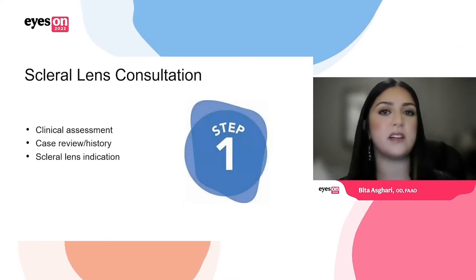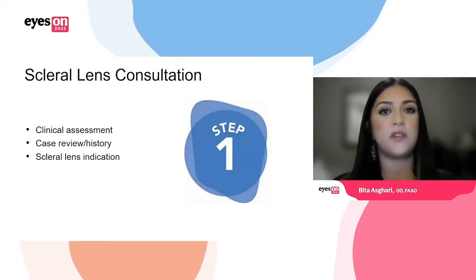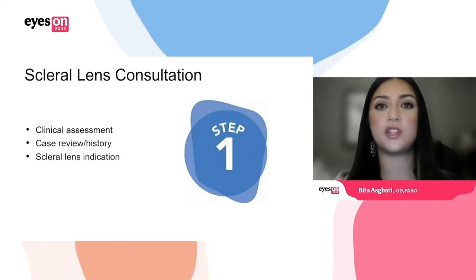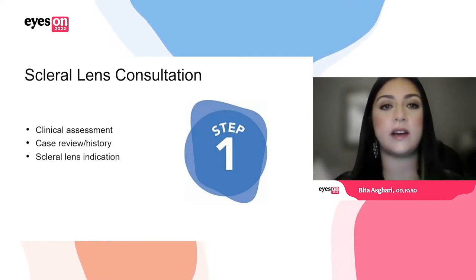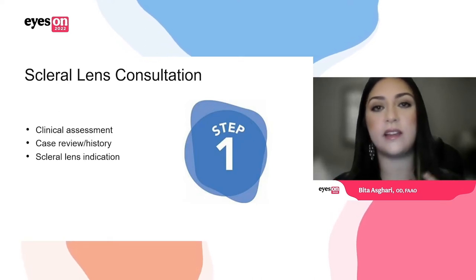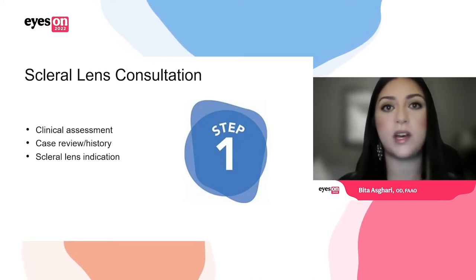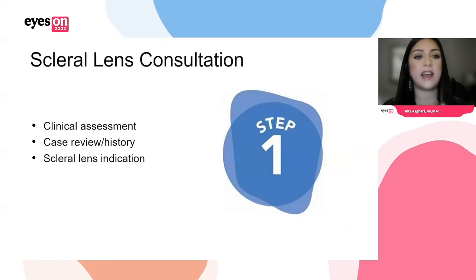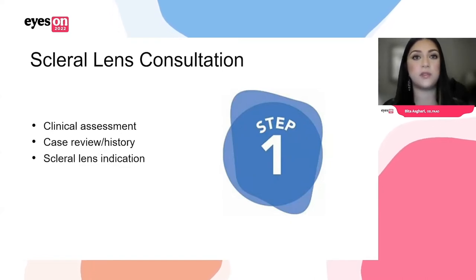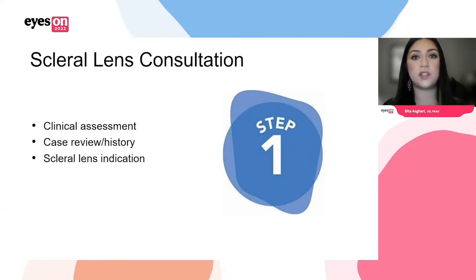What do we do as part of a scleral lens consultation? First and foremost, you do a clinical assessment — simply looking at and evaluating the patient's clinical presentation. You also review their case and discuss their history. And lastly, there has to be some type of indication: is there indication to improve vision, improve comfort, or support the surface of the eye? It all starts with this initial first step.